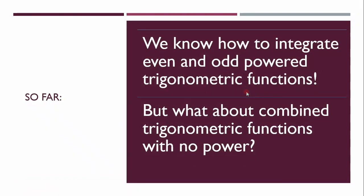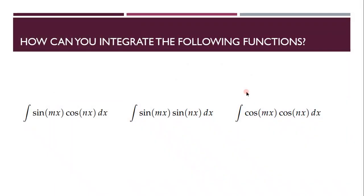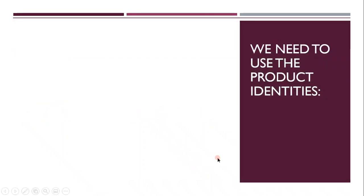So far, we know how to integrate even and odd power trigonometric functions. But what about combined trigonometric functions with no power? What do we do then? So how do we integrate the following functions? So we need to use the product identities.